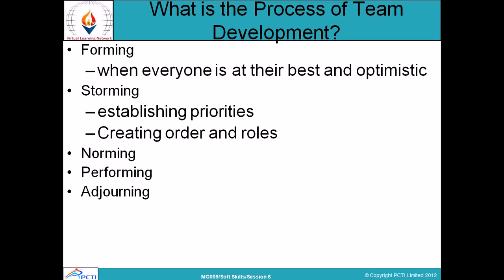The first task is forming — when everyone is at their best and optimistic. Here you form the team, bringing different members to your group who will provide different roles. Next is storming, where you decide priorities — who is in supportive roles, who will supervise, who will do practical work. You establish your priorities and create order and roles for everybody. This stage is called the storming stage.